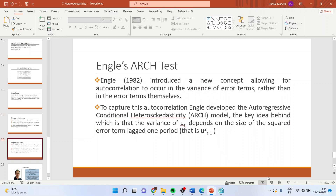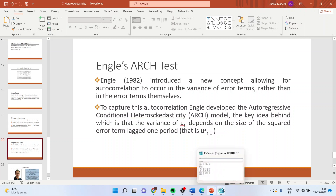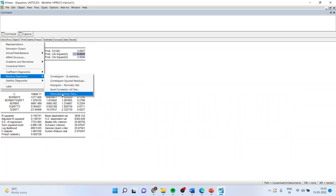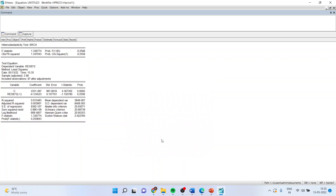One more test: Engle's ARCH test. A new concept allowing for autocorrelation to occur in the variance of error terms, rather than in the error terms themselves, was introduced by Engle. He developed the Autoregressive Conditional Heteroscedasticity (ARCH) model. The key idea is that the variance of mu_t depends on the size of the squared error term lagged one period. In EViews, go to View, Residual Diagnostics, Heteroscedasticity, ARCH test, keep lags at 1, and click OK. Here the p-value is more than 0.05, so we fail to reject the null hypothesis — the residuals are not autocorrelated.